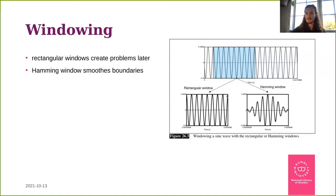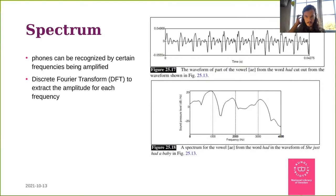We assume the signal inside those windows is stationary. When cutting the window, we smooth the edges with a Hamming function, which gives us mathematical properties needed for the next step. If we look at the waveform for the vowel 'e', we can see a repeating pattern with four peaks — these peaks are characteristic for different vowels. With Fourier transformation we can extract which frequencies are being amplified.